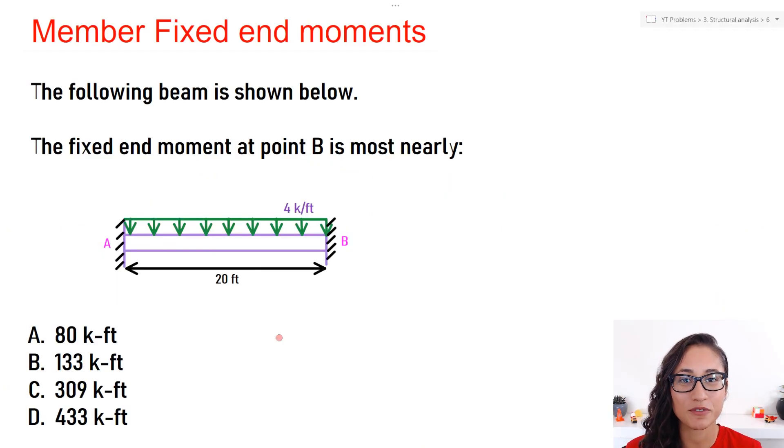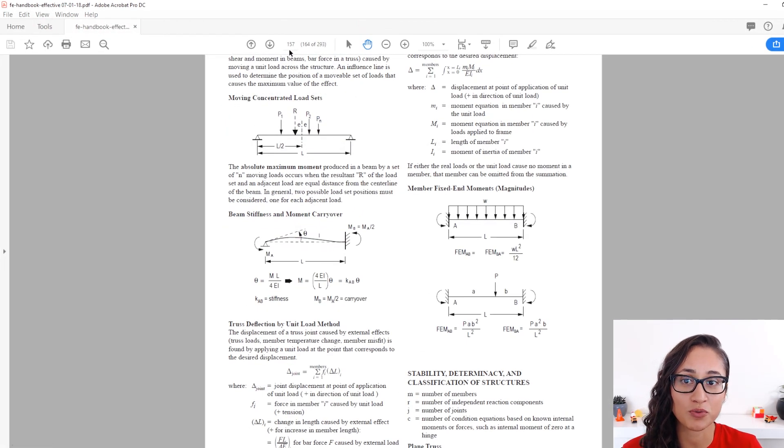Okay guys, so we are giving the following beam and we need to calculate the fixed end moment at point B. Note that this structure is actually indeterminate because we have two fixed ends, we have too many end nodes and only three equations, so it's hard to solve for this problem using statics. But the equation for fixed end moment is provided to you on the reference manual on page 157.